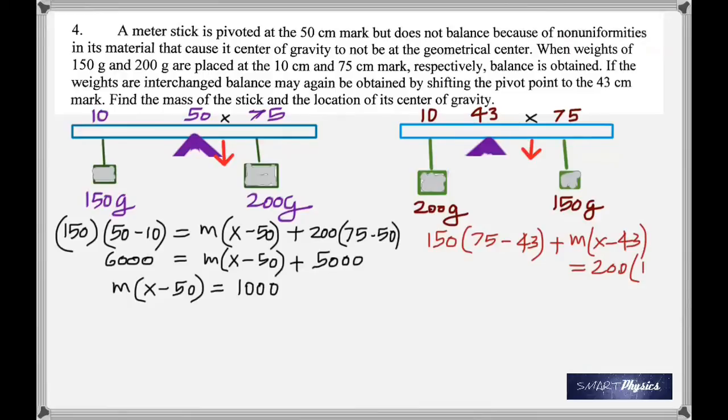On the left-hand side, you have 200 times, again, 43 minus 10. It's 43 minus 10. So the left side, you get 4800.